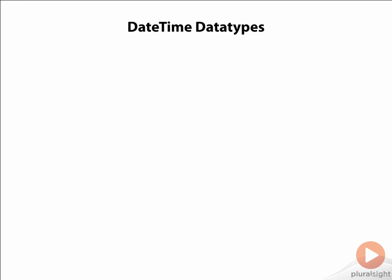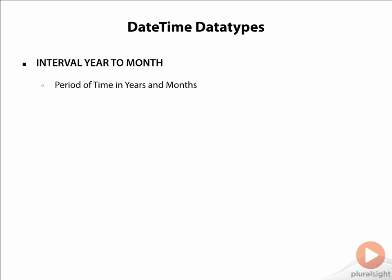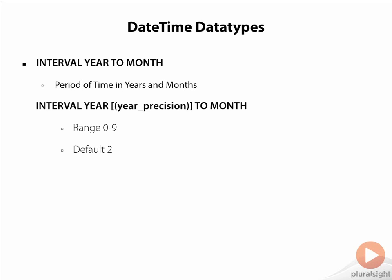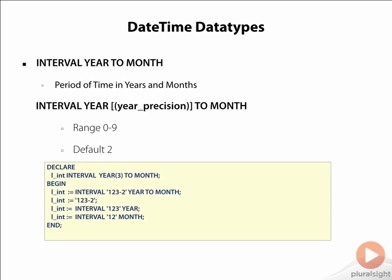Let us now talk about the interval type. As the name suggests, they are used to express time intervals. The interval year to month indicates a time interval in years and months. It is specified as the keyword INTERVAL YEAR with a year precision, ranging from 0 to 9, with a default value of 2.